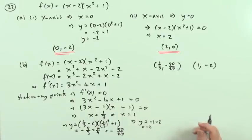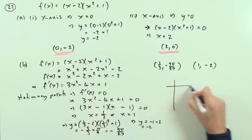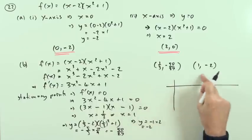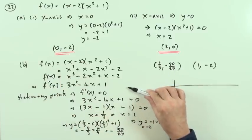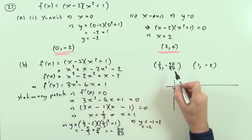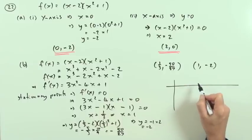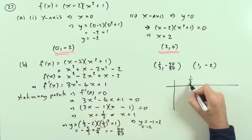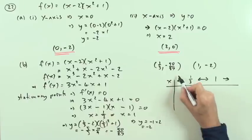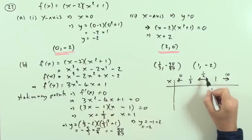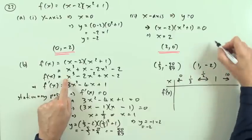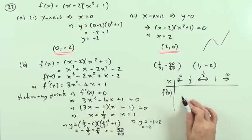Now determine their natures. I'll put down a sign table. It's a continuous function, so nothing nasty happens between the two points. I'll use x values before, between, and after — like 0, one half, and 10. I know what to expect anyway: it's a cubic graph, so there'll be a maximum then a minimum.